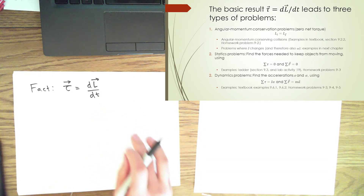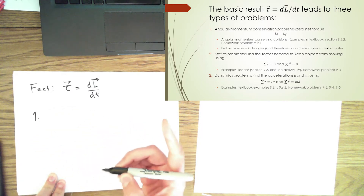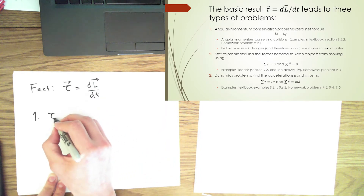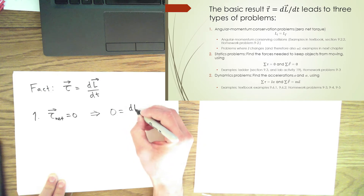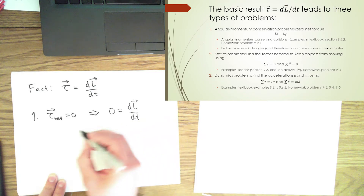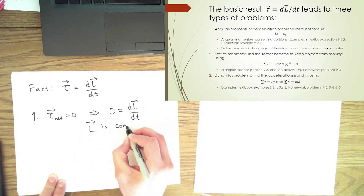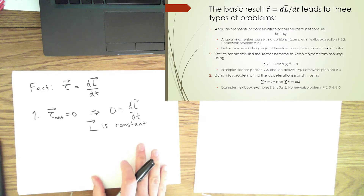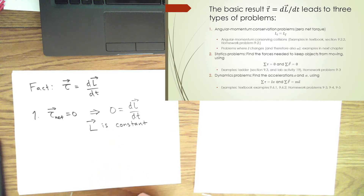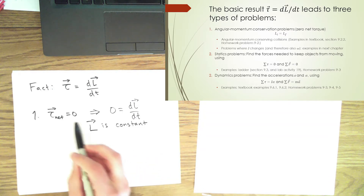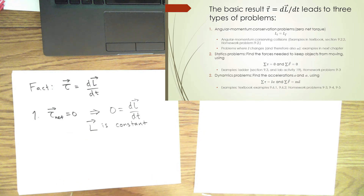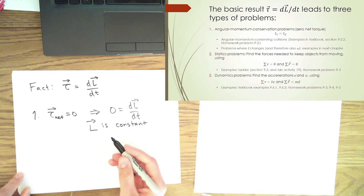Even if you're not super comfortable with time derivatives and calculus, the first type of problem is the kind where the net tau is zero. In that case, there is no change in L with respect to time — L is constant. This is conservation of angular momentum, analogous to conservation of linear momentum when net force is zero.